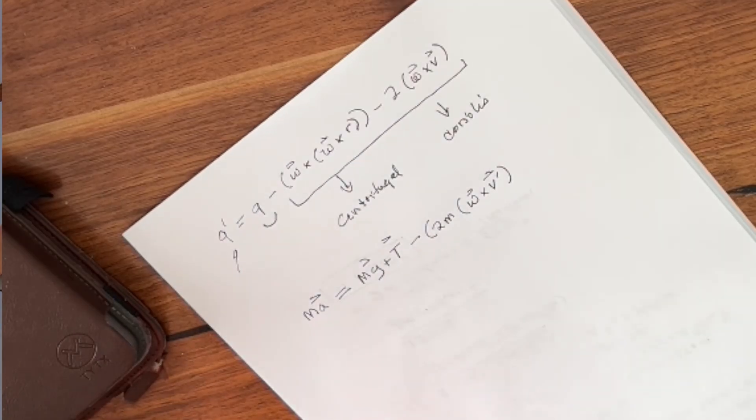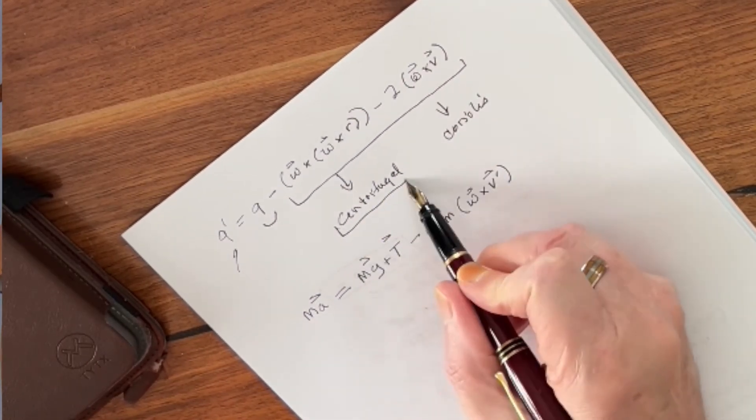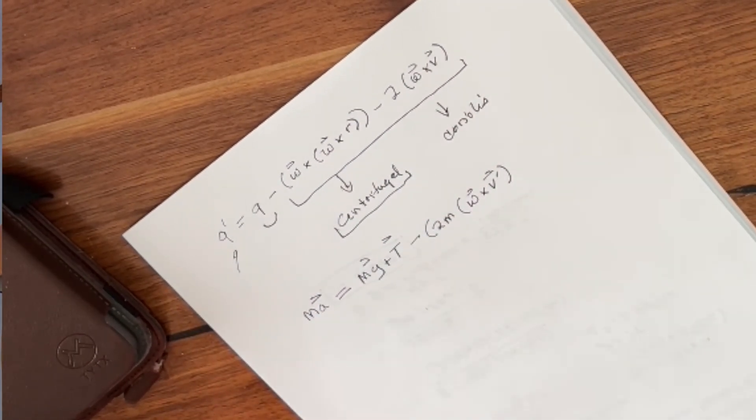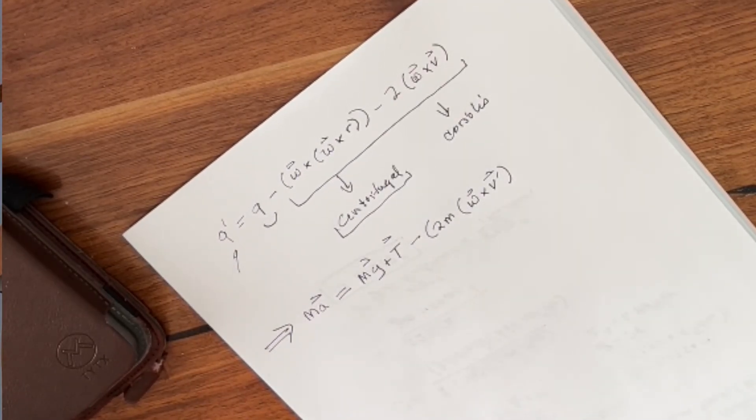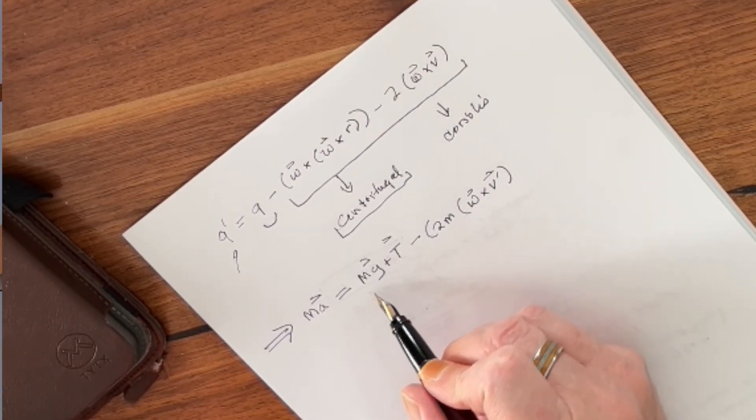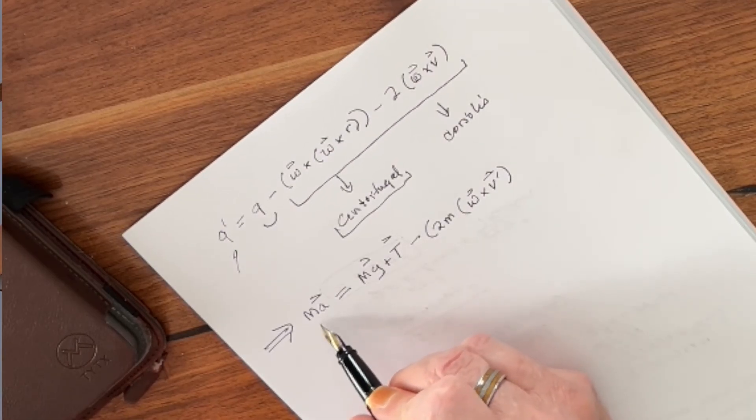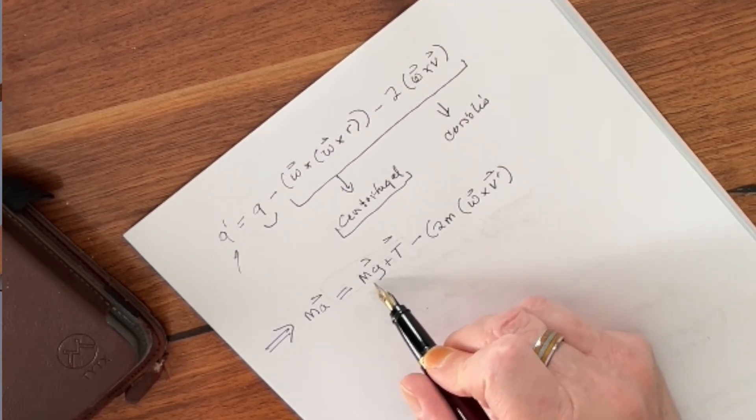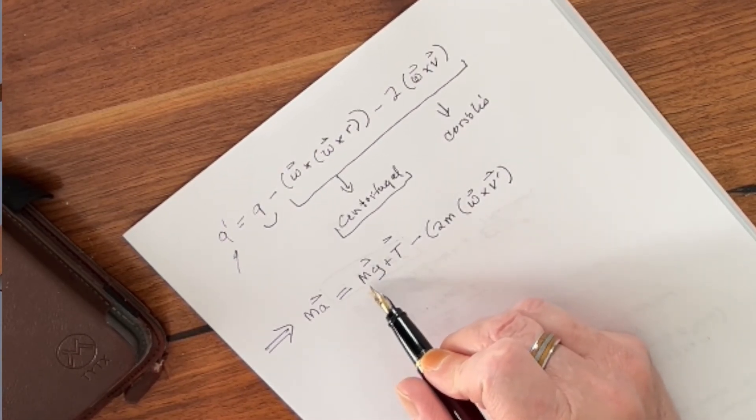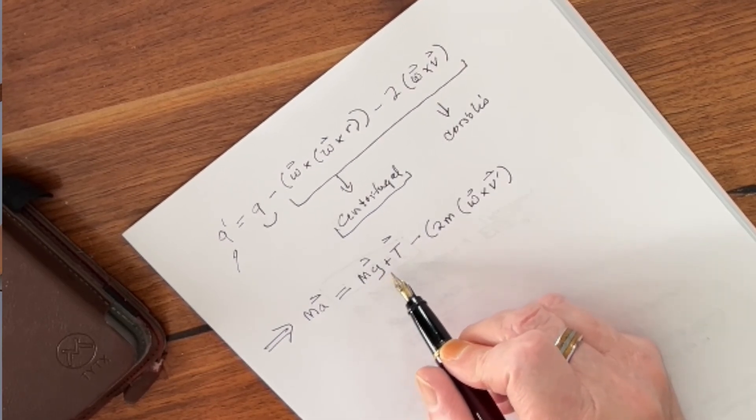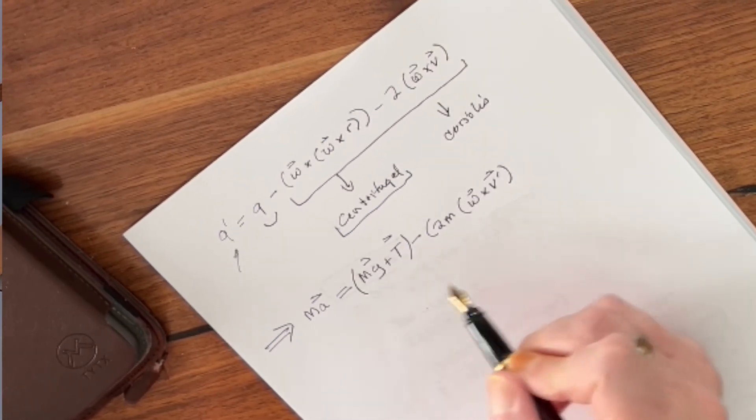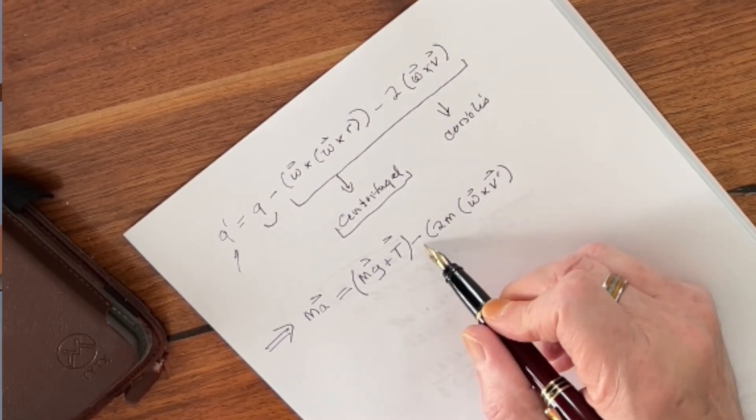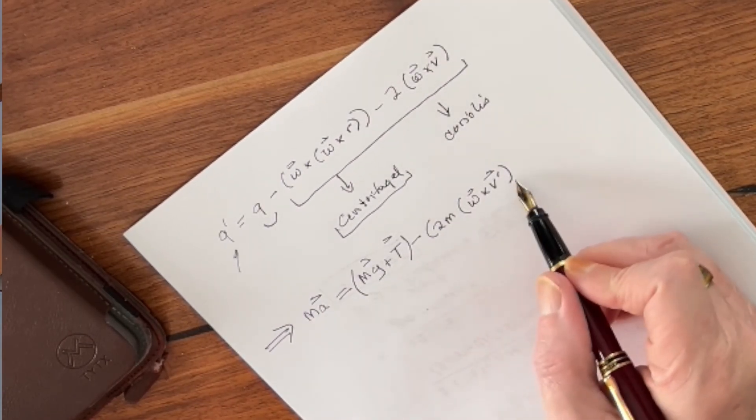Now, because we can safely disregard the centrifugal force, this is going to be the equation of the Foucault pendulum. Basically, what we're looking at is the force, or the mass times acceleration, is going to be the force of gravity, which is the mass times the acceleration of gravity, plus the tension. These are the Newtonian forces right here. And then we're going to subtract from that the Coriolis force.